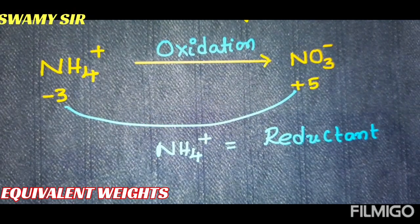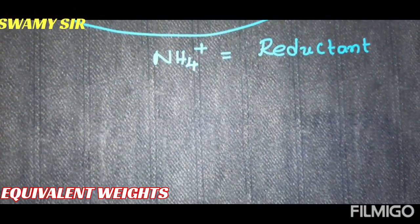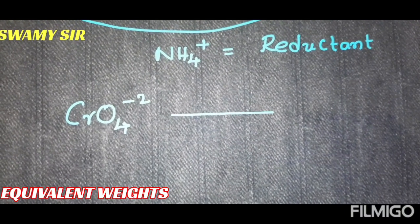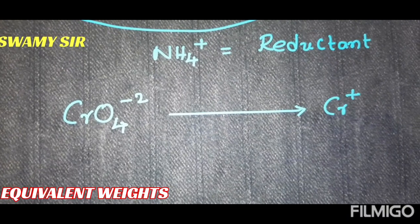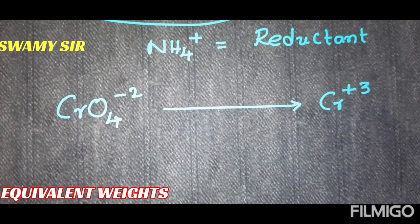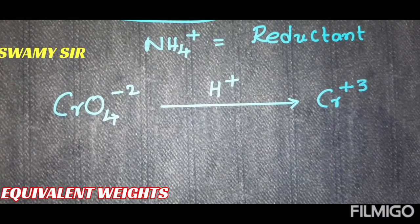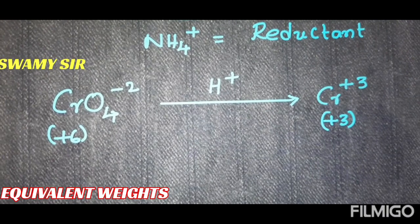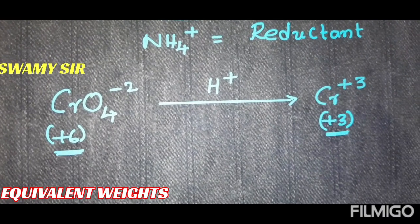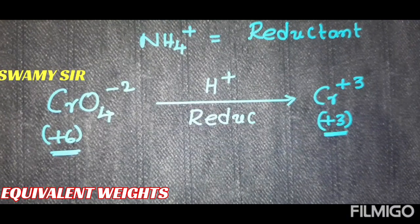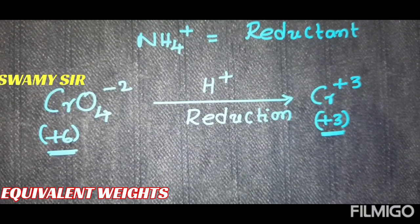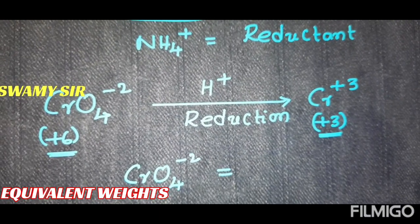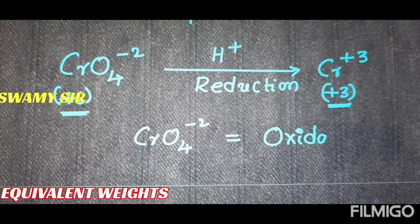Taking one more example: CrO₄²⁻, in a given reaction under suitable conditions, will change to Cr³⁺. Here, the oxidation state of chromium is +6, and it changes into +3. A decrease in oxidation number indicates reduction. The species which undergoes reduction is called the oxidizing agent. So in this example, CrO₄²⁻ is the oxidizing agent, or oxidant.